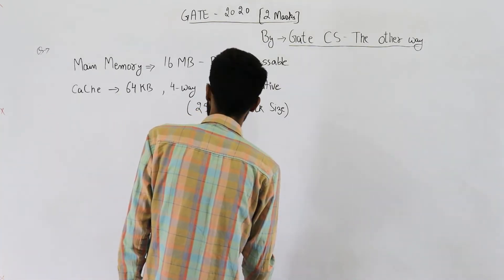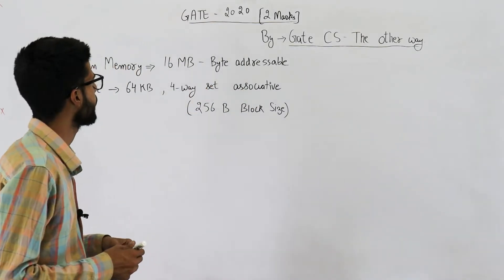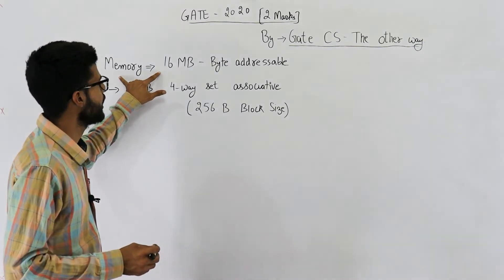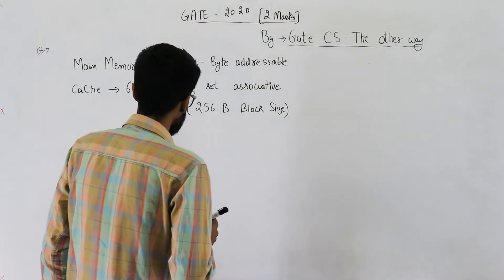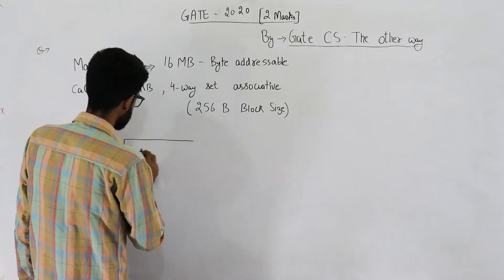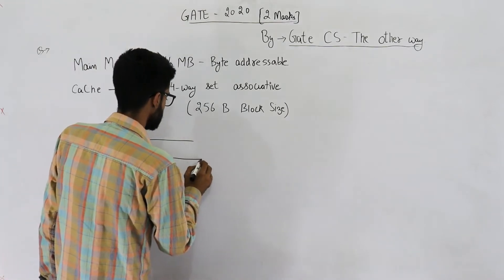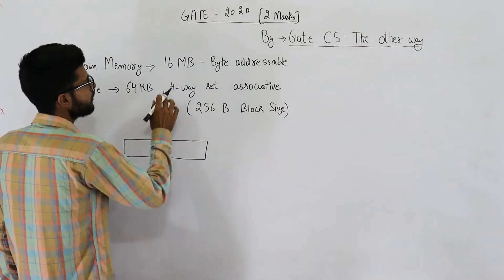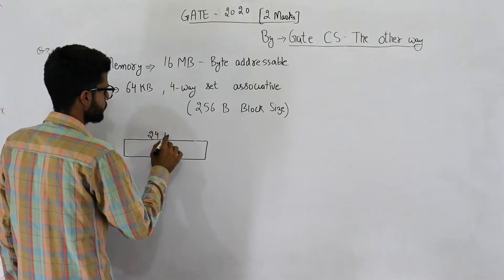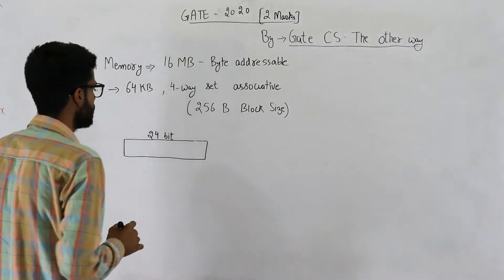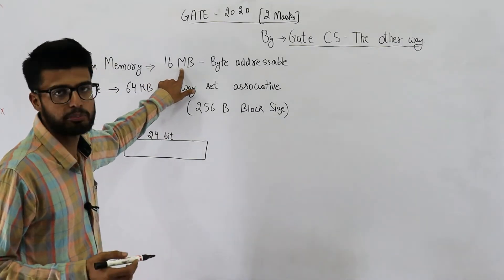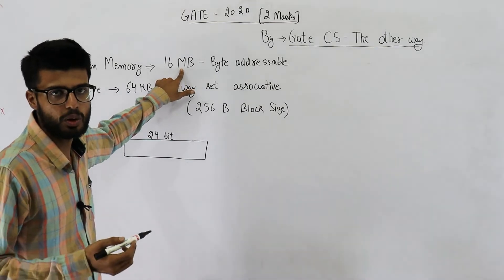I've noted down the information given in the question. Main memory is 16 MB, so the physical address required to fetch a word from main memory will be 24 bits, because 16 MB is 2^4 × 2^20, so 20 plus 4 equals 24 bits.